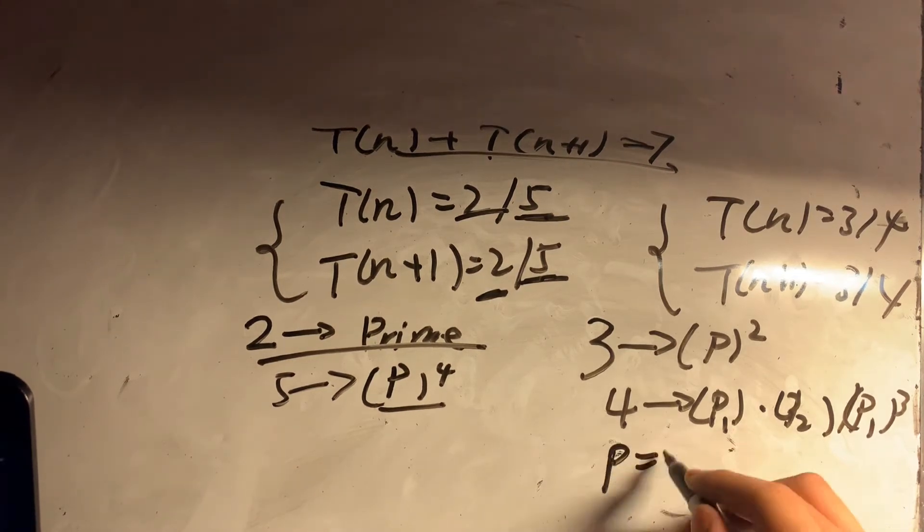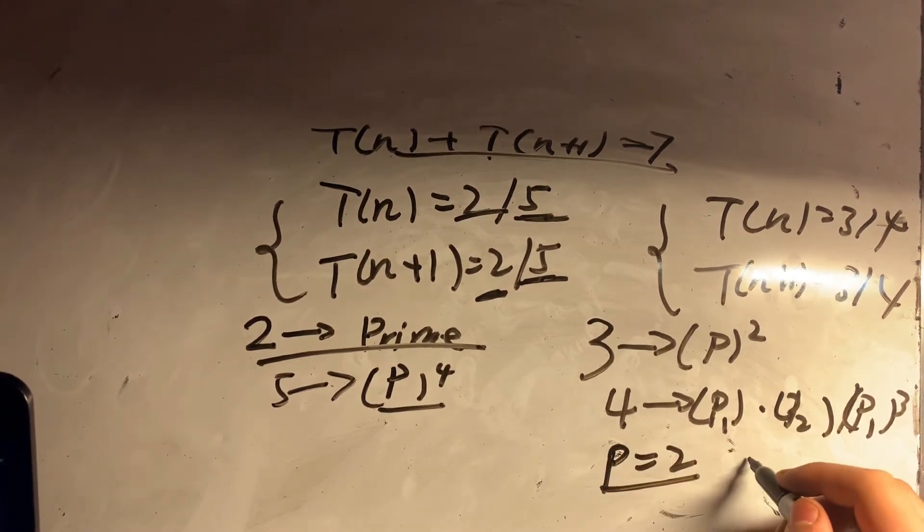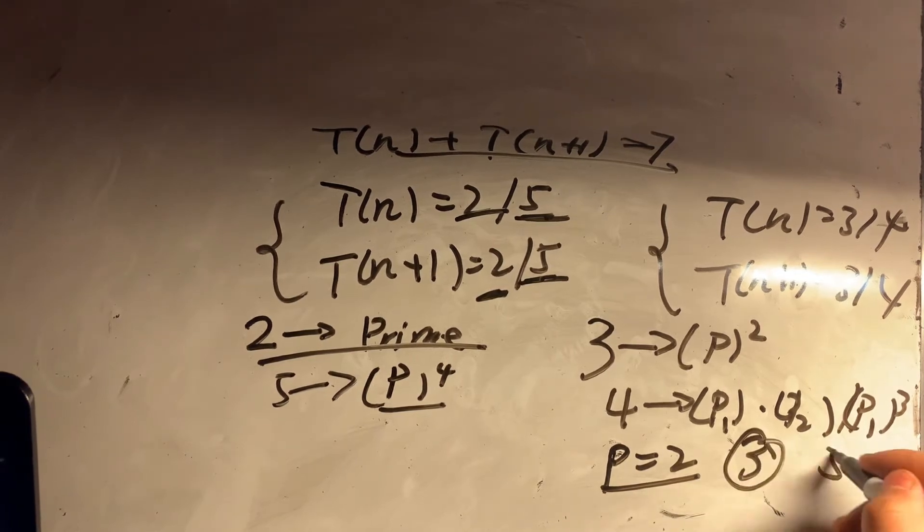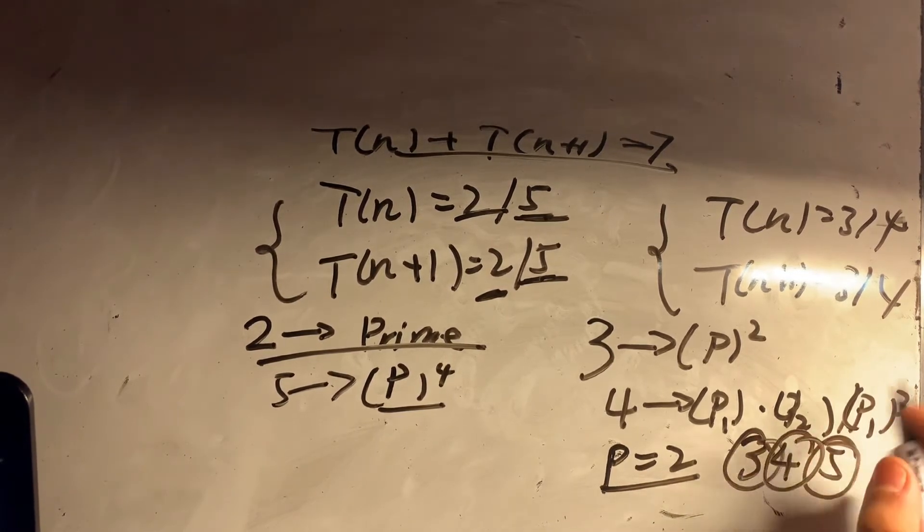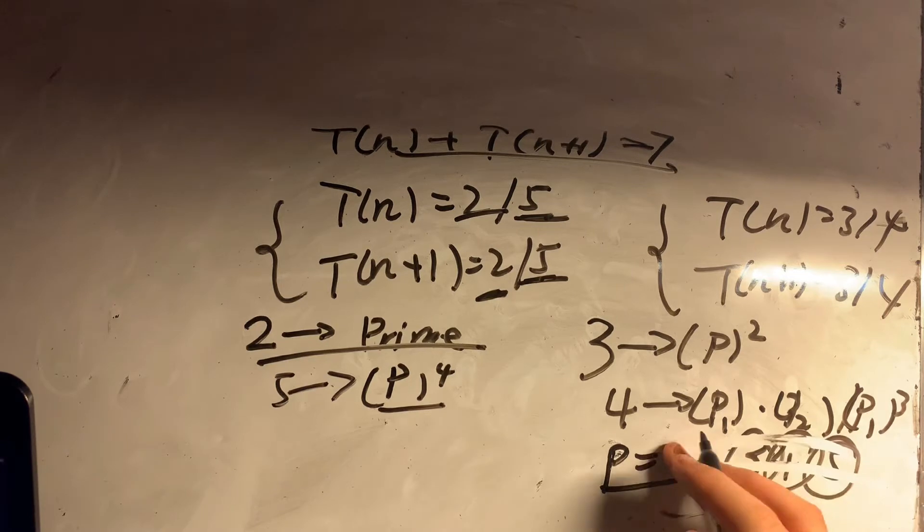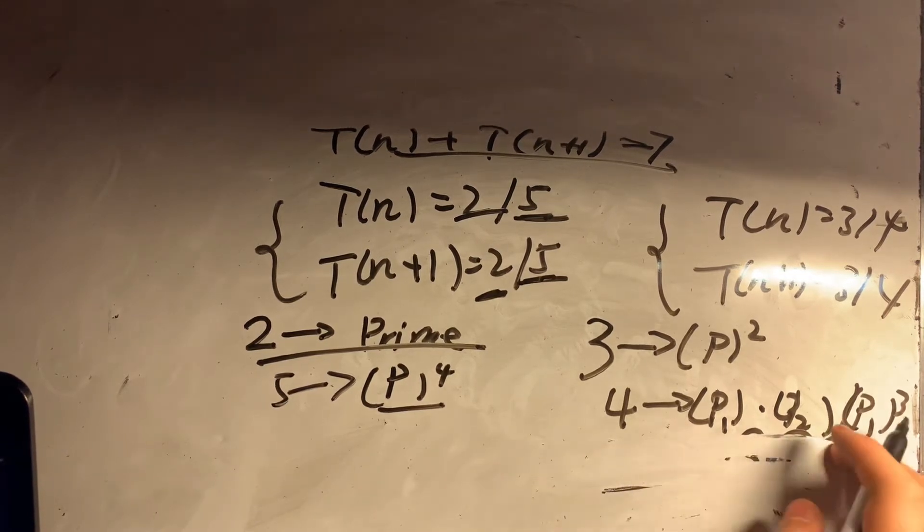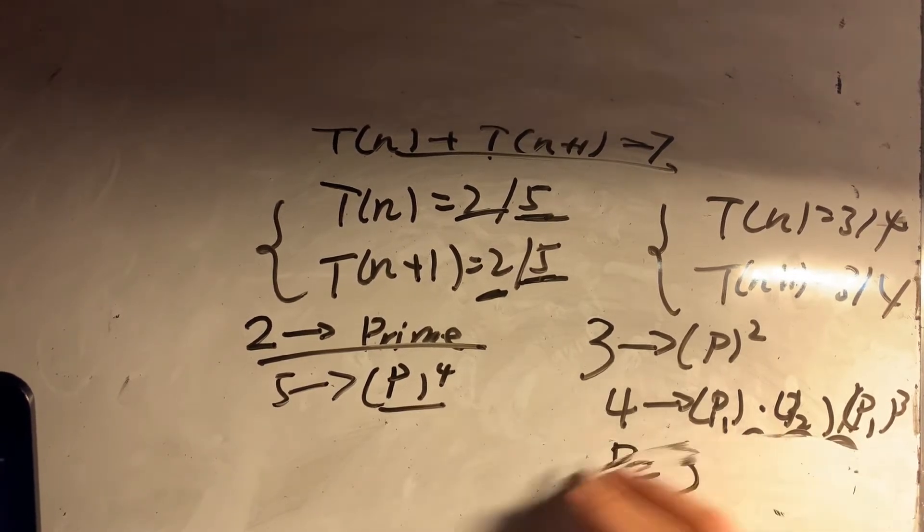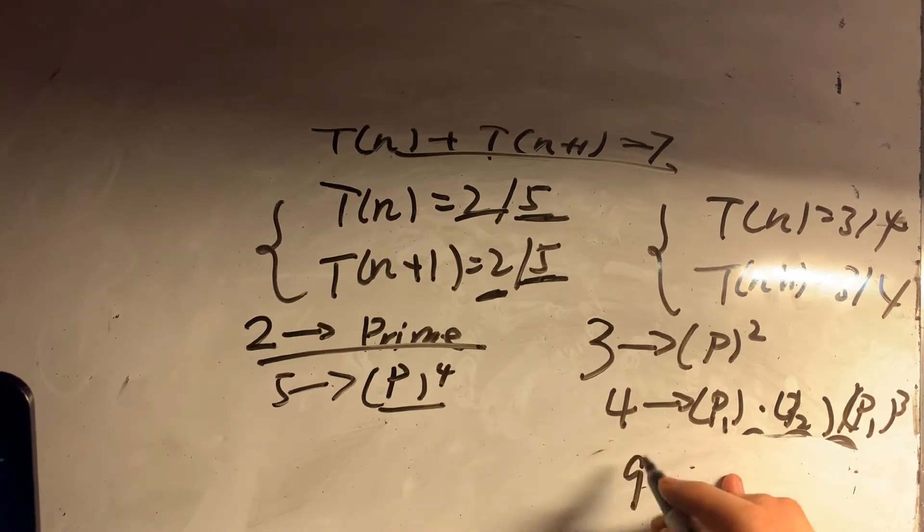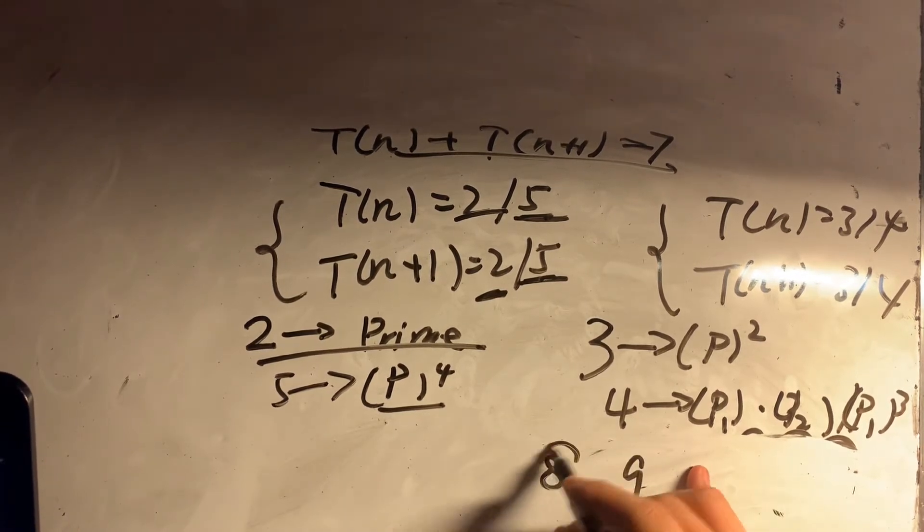We set P as 2. But since P is 2, the number is either 3 or 5. They are all prime numbers and do not have 4 divisors. Let's now try P is equal to 3.